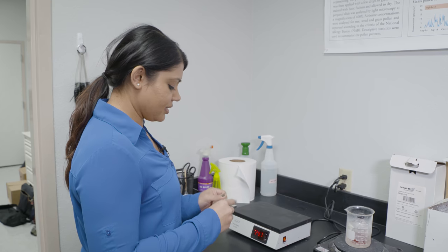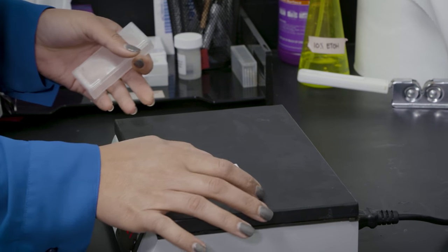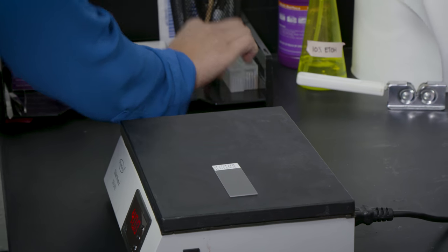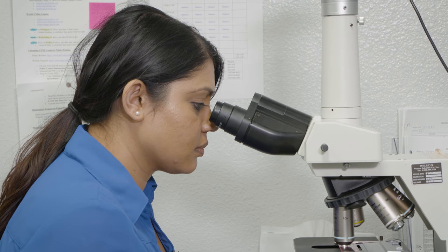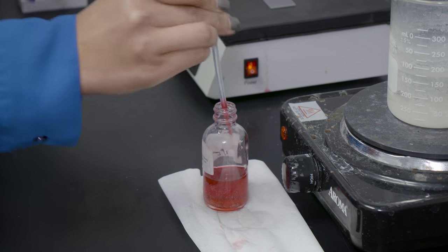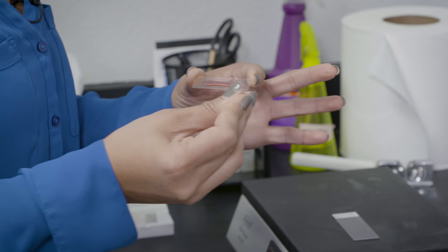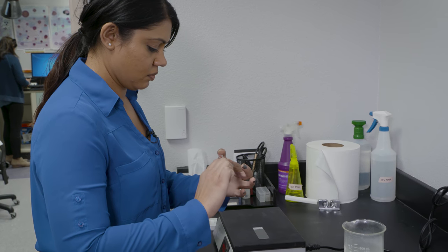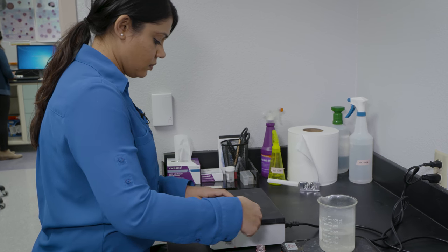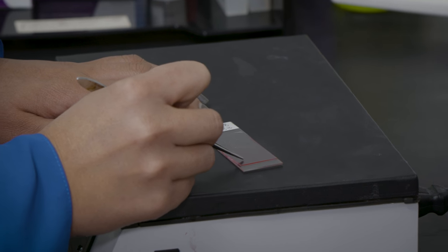After we collect the slides from the samplers, we put them on a slide warmer. The pollen grains themselves are clear if you look at them under a microscope without the stain, so we need that purple pinkish stain to penetrate the pollen grain. We warm it up so it opens those grains to allow the stain to penetrate, and once it's dry—about 15 to 20 minutes—we're able to analyze it under a microscope.